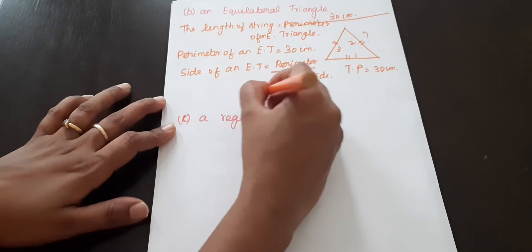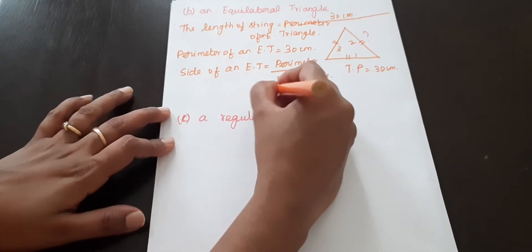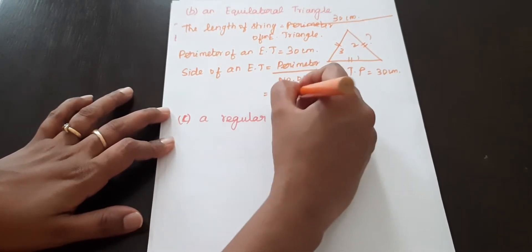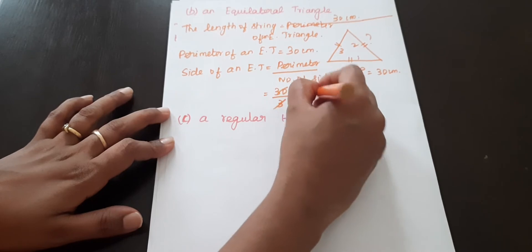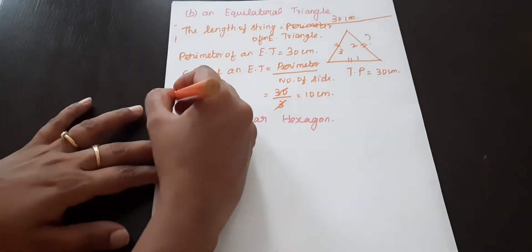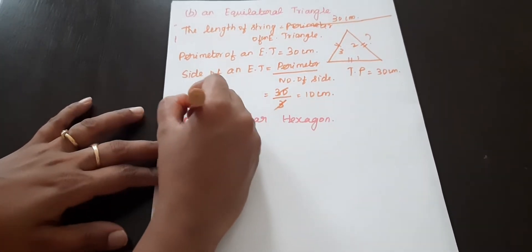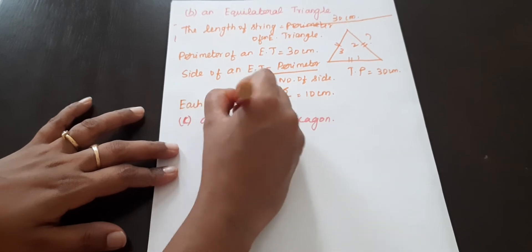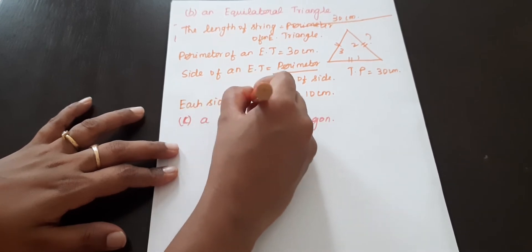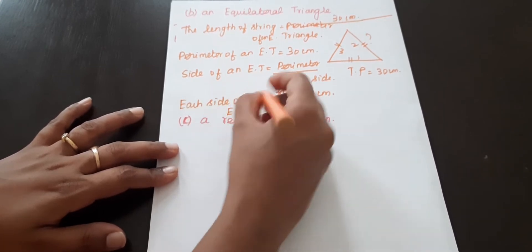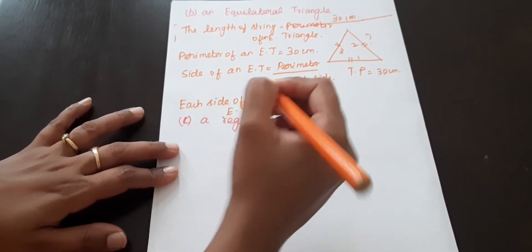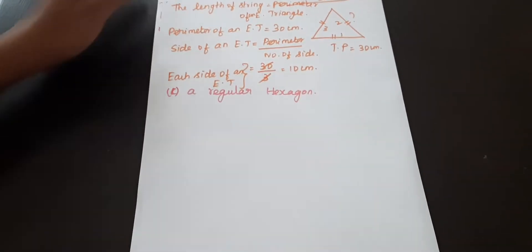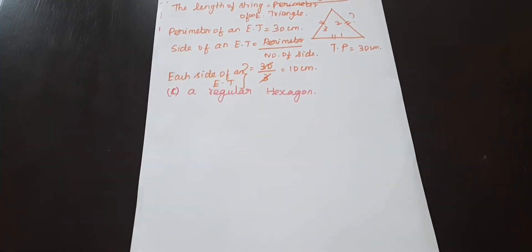So 30 divided by 3 equals 10 cm. Each side of the equilateral triangle is 10 cm.